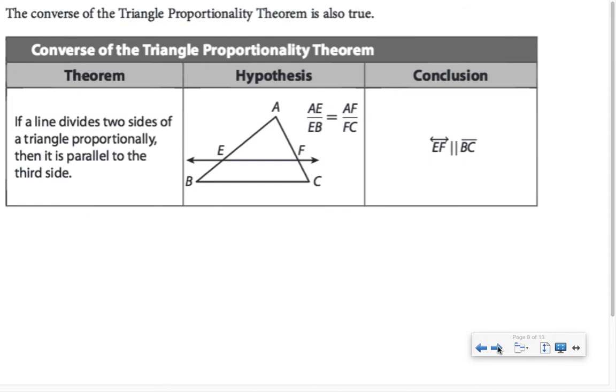The converse of the triangle proportionality theorem is also true. This allows us to do: if we see these proportional segments, AE over EB equal to AF over FC, we can use that information to conclude that EF is parallel to BC.